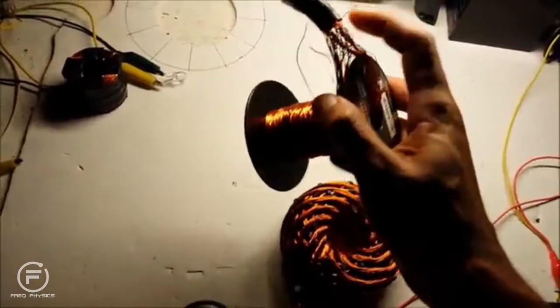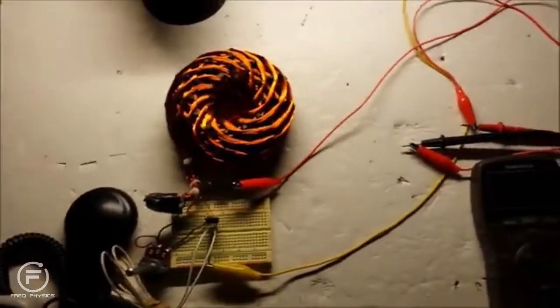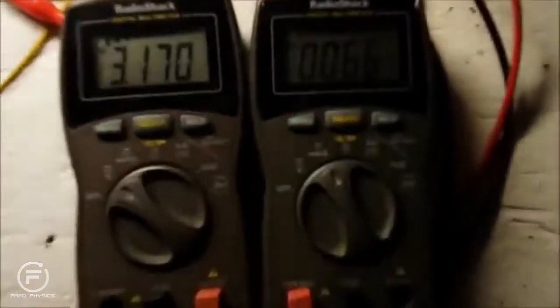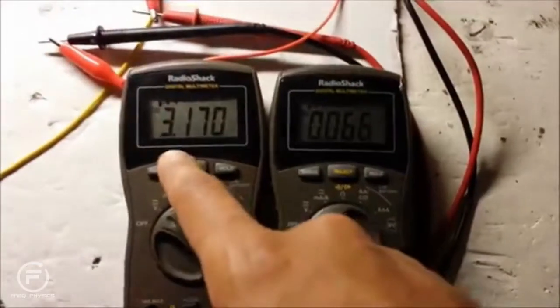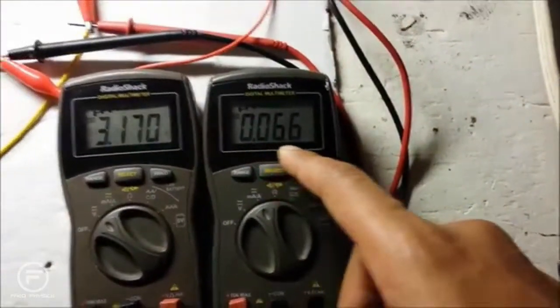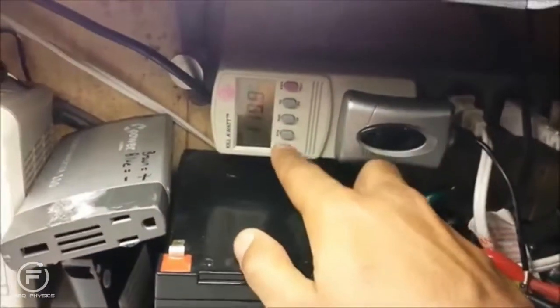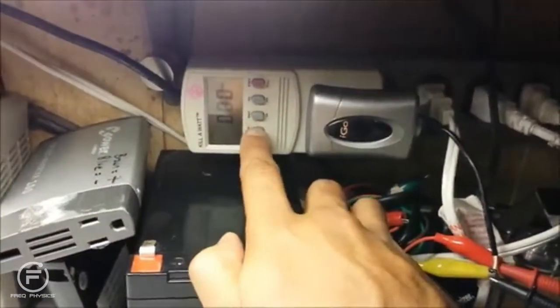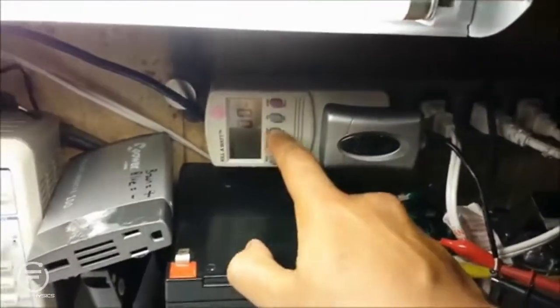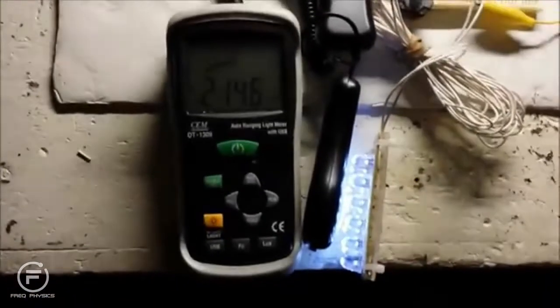We're looking at a stable input: 3.170 volts multiplied by 0.066 amps will give you the wattage. We're under one watt of power, so the meter is not able to detect the amperage or the overall wattage, so it's just saying zero. That's the wattage input.